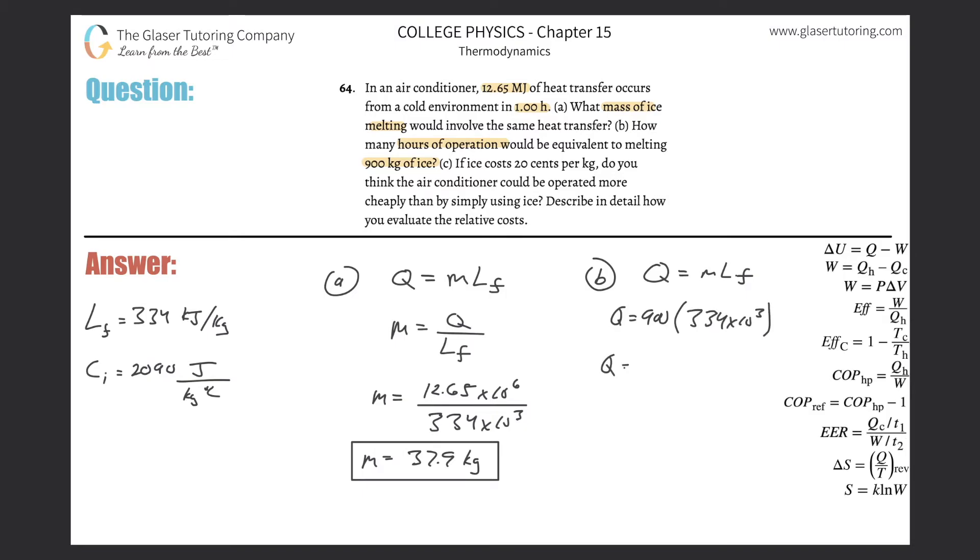And let's find that. So now this is going to be 900 times then 334 times 10 to the 3rd. So I realize that this is going to be about 3.01 or so times 10 raised to the—3, 6, 7, 8—it looks like 8 joules. So this is the amount of heat necessary to melt 900 kilograms of ice.